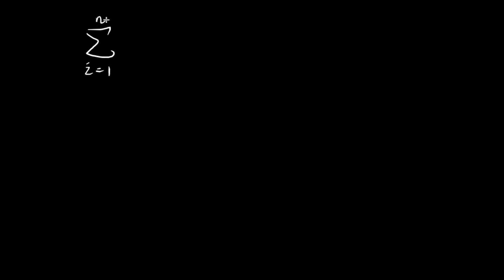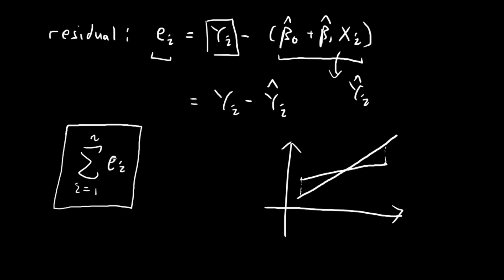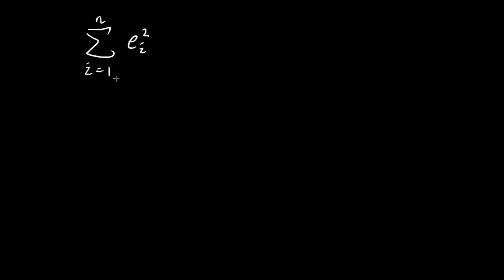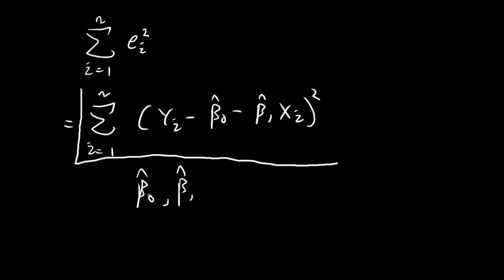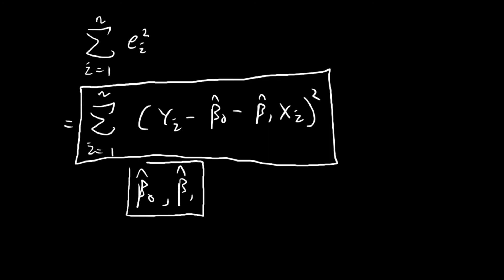To get around this problem, instead of considering the sum of residuals, we're going to consider the sum of the squares of the residuals. Now that we square everything, all terms are positive, so residuals can't offset each other — this is a viable method. We want to find values of beta0 and beta1 such that this sum of squared residuals is minimized, and those values will be our estimates. In the next video, I'll show the details of how we obtain formulas for beta0-hat and beta1-hat using the sum of squared residuals as our guiding principle.